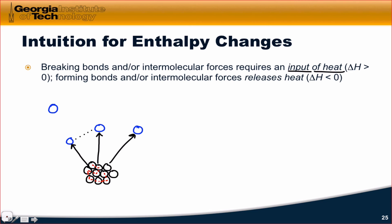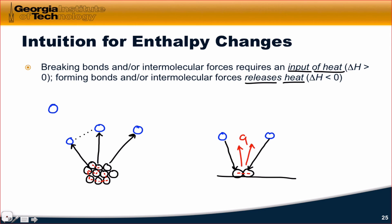Forming bonds or intermolecular forces releases heat — this is just the exact opposite process. When two water molecules in the gas phase find themselves colliding on the surface of a liquid and getting close to one another and forming hydrogen bonds, there's a release of energy and a transfer of heat outward to the surroundings. So for a condensation process, delta H is going to be less than zero. But during the evaporation process, since heat must flow into the system, delta H is greater than zero.